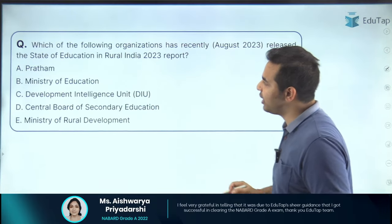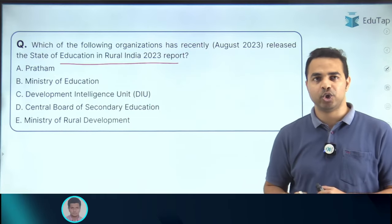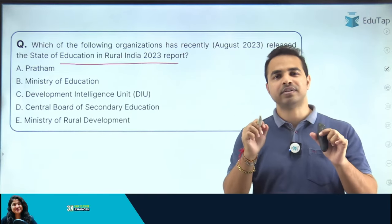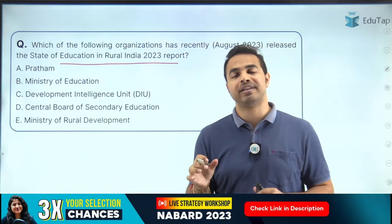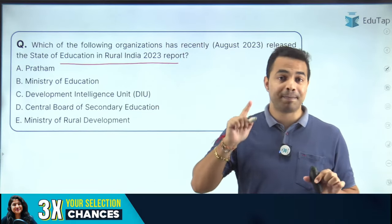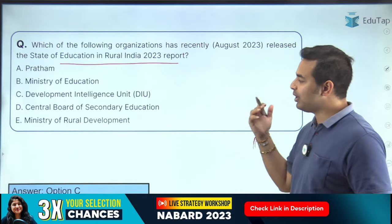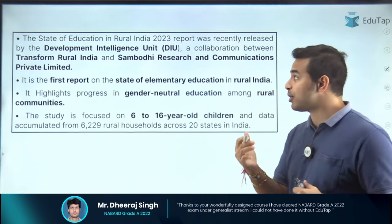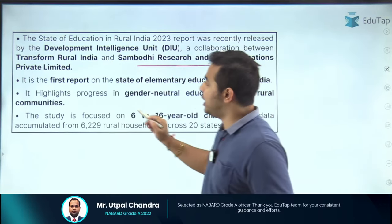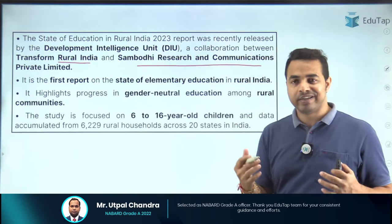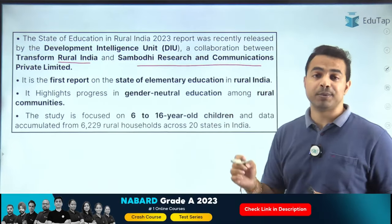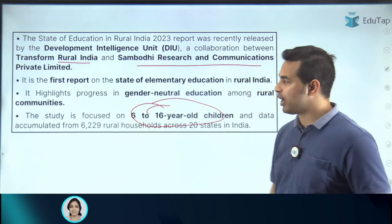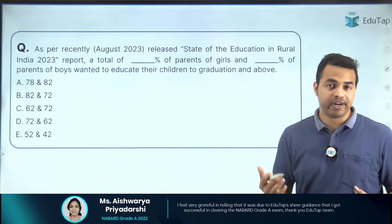The next report is 'State of Education in Rural India 2023'. This is the first such report focusing on elementary education in rural areas. It was released by Sambodhi Research and Communications along with Transform Rural India. The report examines progress on gender-neutral education and caters to children in the age group of 6 to 16 years.